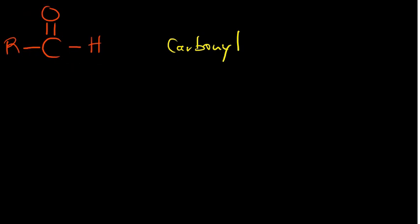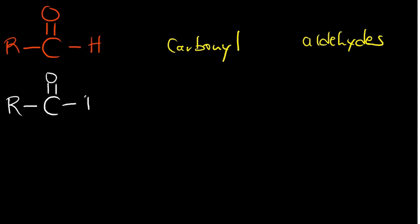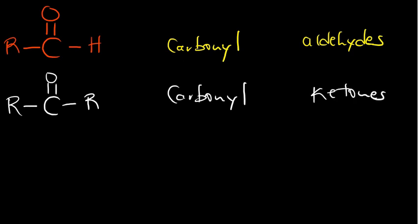The carbonyl group, when it occurs at the end of a chain, falls under a class called aldehydes. In a case where it occurs internally — meaning there is no hydrogen on either end and there are groups on both sides — the functional group is still carbonyl, but the class becomes ketones.